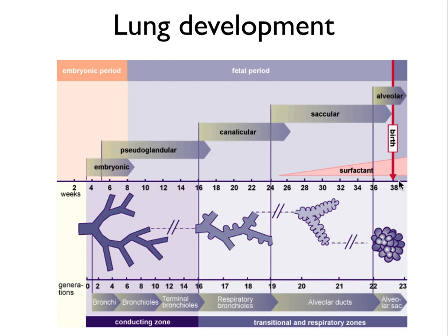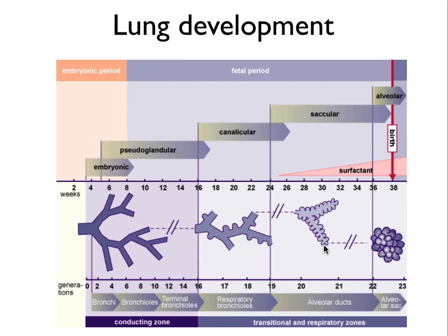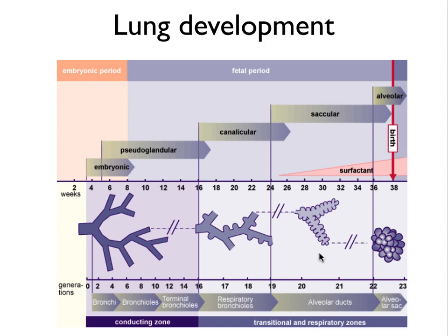In the saccular and alveolar phases, the club cells and the type 2 epithelial cells start producing surfactant. That is because in this stage the total surface area of the lung increases enormously, and therefore the surface tension increases enormously. If there wasn't any surfactant, the lungs would collapse. Surfactant is a type of soap that decreases the surface tension and thereby keeps the lungs open.